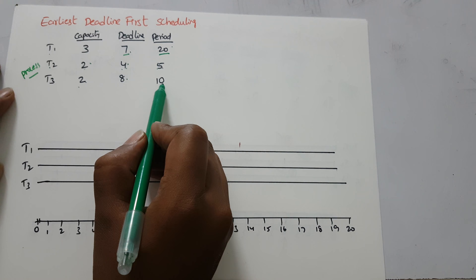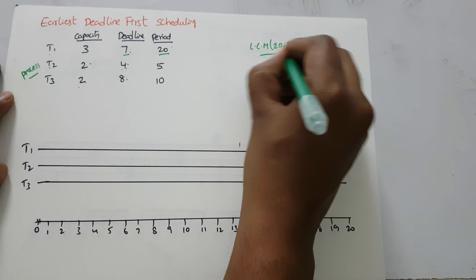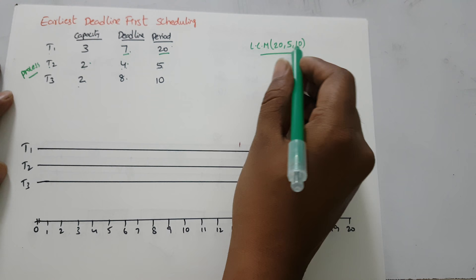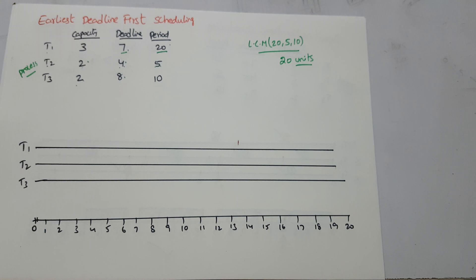We will take the LCM of these periods to determine how many units we need to consider. The LCM of twenty, five, and ten — which are the periods — is twenty. So we have to take at least twenty units into consideration.